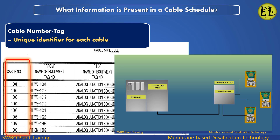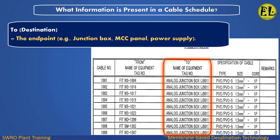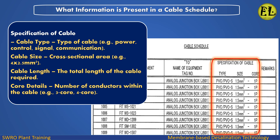What information is present in a cable schedule? Cable number or tag — a unique identifier for each cable. From source: the starting point, for example a field instrument, motor, or sensor. To destination: the end point, for example a junction box, MCC panel, or power supply. Specification of cable: cable type, for example power, control, signal, or communication cable.